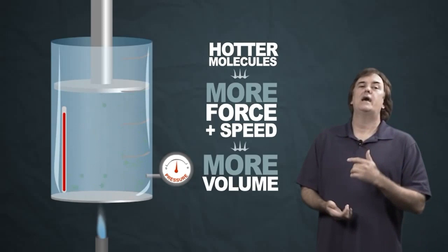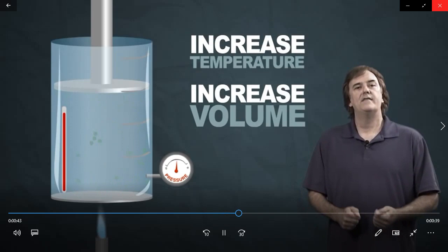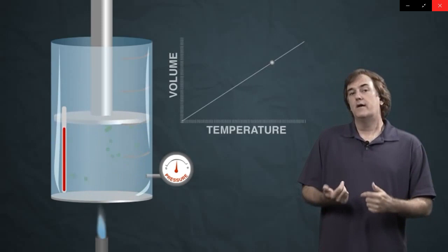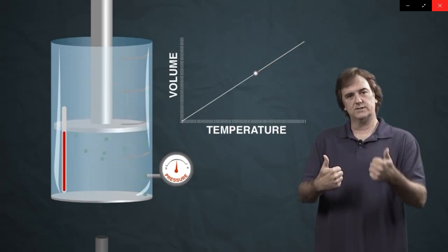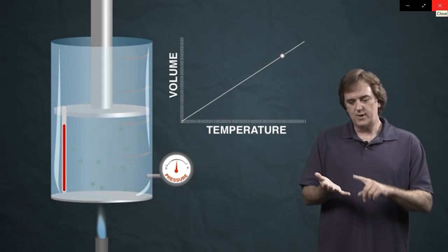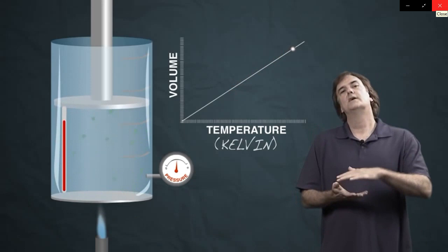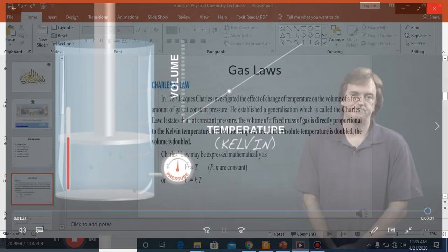As the molecules become hotter, they have more force, they travel quicker, and they lift the piston up to a much bigger volume. This illustrates the fact that when you increase temperature, you increase the volume. And if you allow it to cool — take away the heat — the gas will fall back to a smaller volume as the temperature decreases. So temperature and volume are directly proportional. You must use absolute temperature — the Kelvin scale. If you double the Kelvin temperature, you will double the volume.